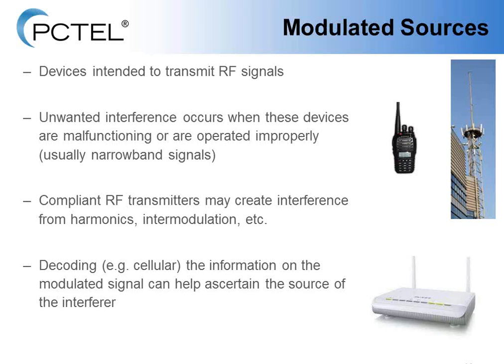Modulated sources are devices that are intended to transmit RF signals, but interference can come from them when they're malfunctioning or operated improperly. These are typically narrowband signals and can come from two-way radios, other mobile towers, or access points. Even compliant RF transmitters can create interference such as harmonics or intermodulation. It can be useful to decode the information on the modulated signal to help ascertain what the source of that interferer might be.